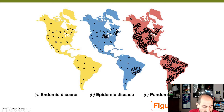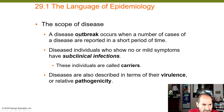Here you can visualize the difference between an endemic disease — low but consistent prevalence over time — an epidemic with a large number of new cases in a short period, and a pandemic spreading worldwide. An outbreak occurs when a number of cases are reported in a short period of time. Diseased individuals who show no or mild symptoms have subclinical infections.